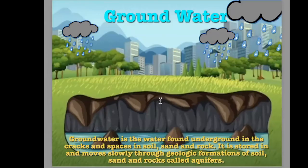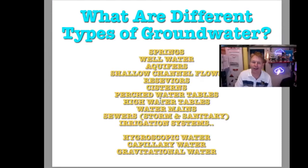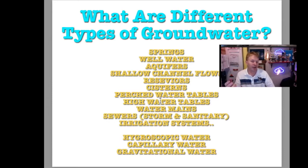Groundwater is basically what we're talking about when we talk about springs and water table issues — it's the water tippling up below the ground. As you're thinking about groundwater, your perception is: what are the different types of groundwater that you've experienced? Here are the various types of groundwater I run into. I'm just going to run through the list: springs, well water, aquifer.